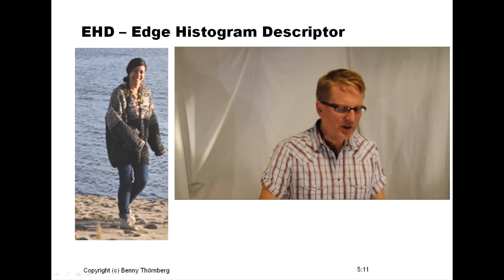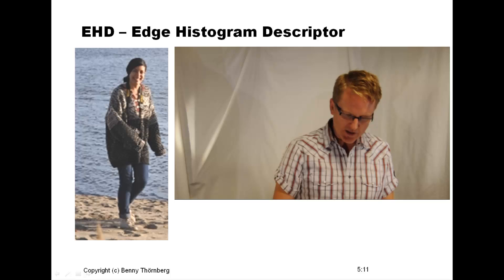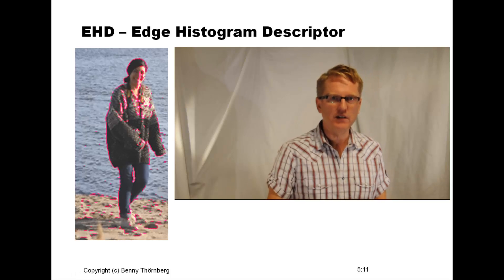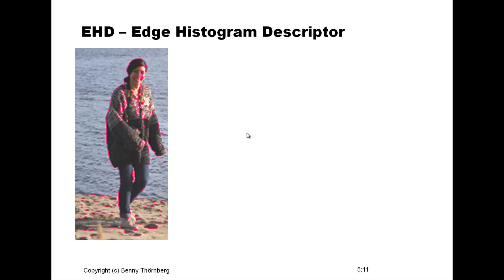We continue by looking at this image showing a woman standing on the beach. We compute the gradients by applying the Sobel operator separately on the red, blue and green color channels, and we try to analyze how the corresponding gradient vectors would look. If you look at the gradient vectors that represent the exterior shape of the woman, if we are able to create a mathematical descriptor that represents the direction of these gradients, then it should provide some kind of representation of the object.